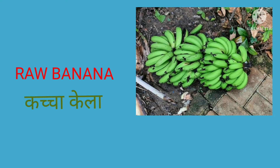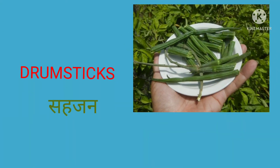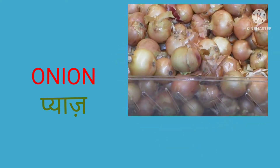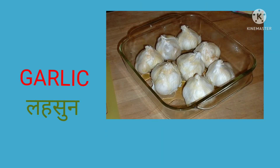This is raw banana, in Hindi it's called kachcha kela. This is drumstick, in Hindi it's called sahajan ki fali or moringa. This is onion, in Hindi it's called pyaaz. This is garlic, in Hindi it's called lehsun.